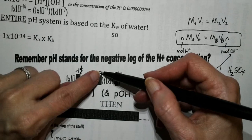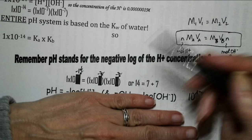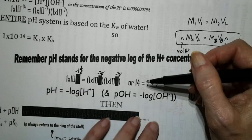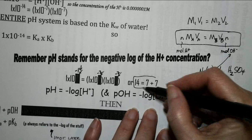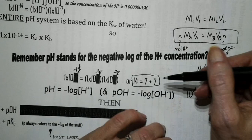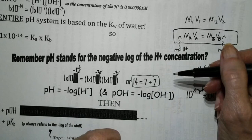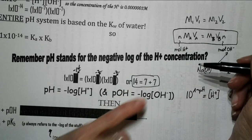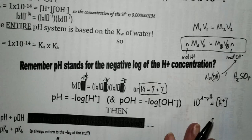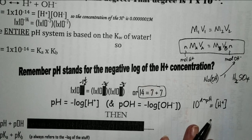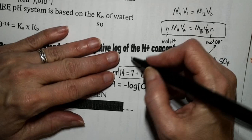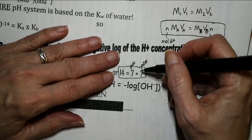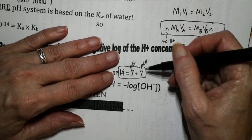Remember that when you multiply numbers with exponents, you add the exponents — so it's 7 plus 7. When you have a pH of 4, to calculate the pOH all you have to do is subtract from 14. Because always, pH plus pOH — the hydrogen ion concentration plus the hydroxide ion concentration — will always equal 14 when you're taking the negative logs.